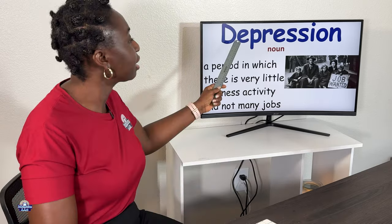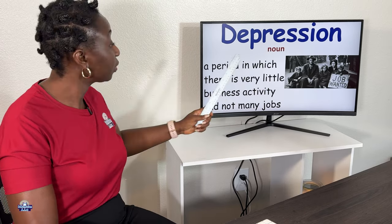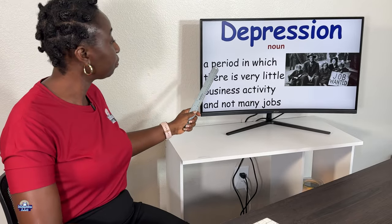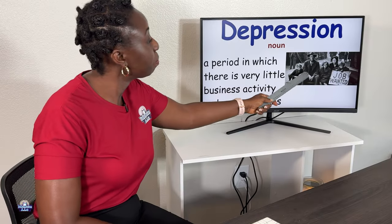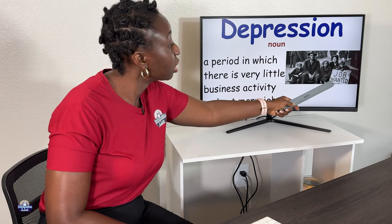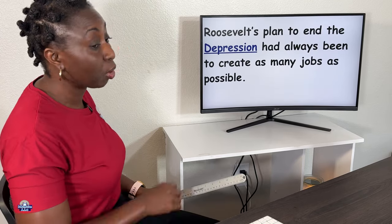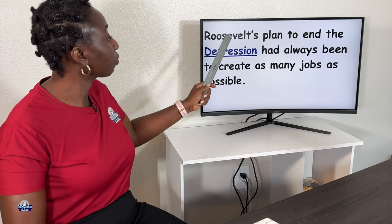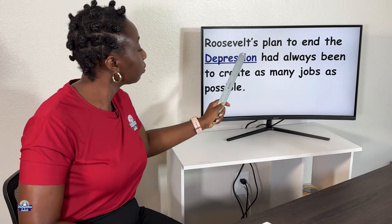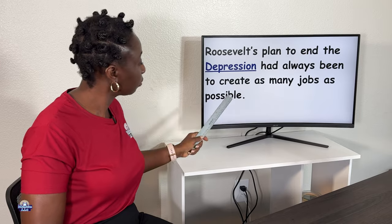The first word is 'depression,' and the part of speech is a noun. The definition: a period in which there is very little business activity and not many jobs. Here is a picture — look at his face, he looks sad and depressed, and they want a job. Let's read it in a sentence: 'Roosevelt's plan to end the depression had always been to create as many jobs as possible.'